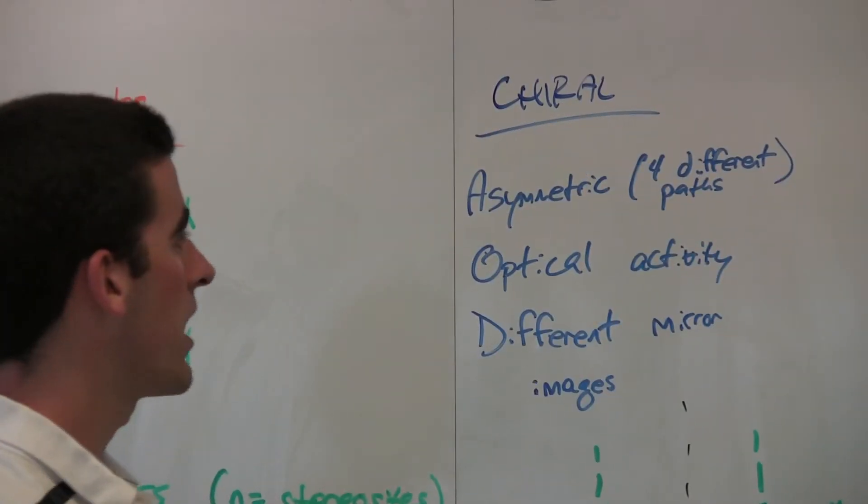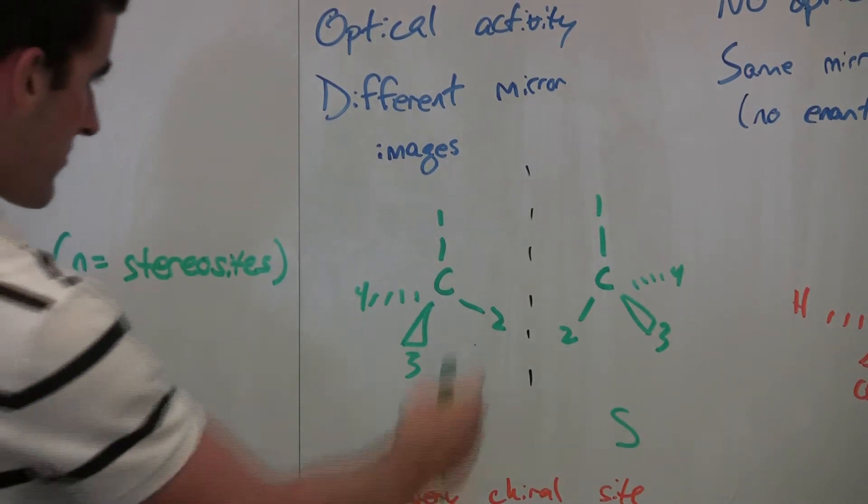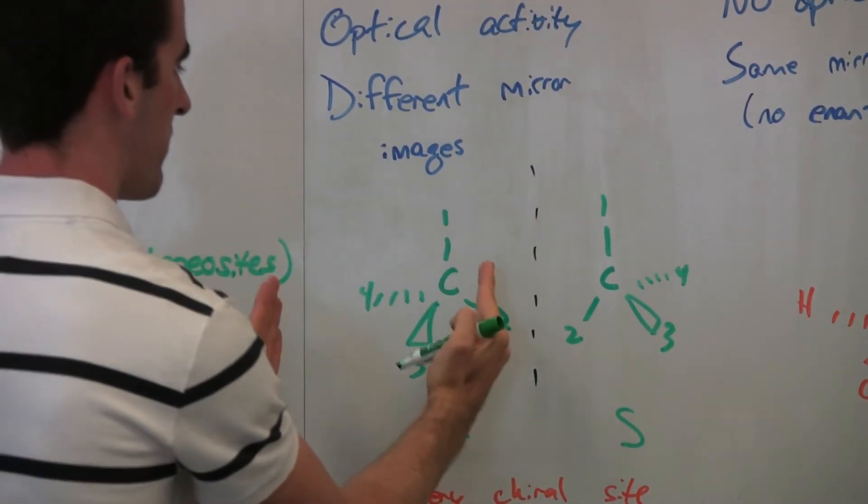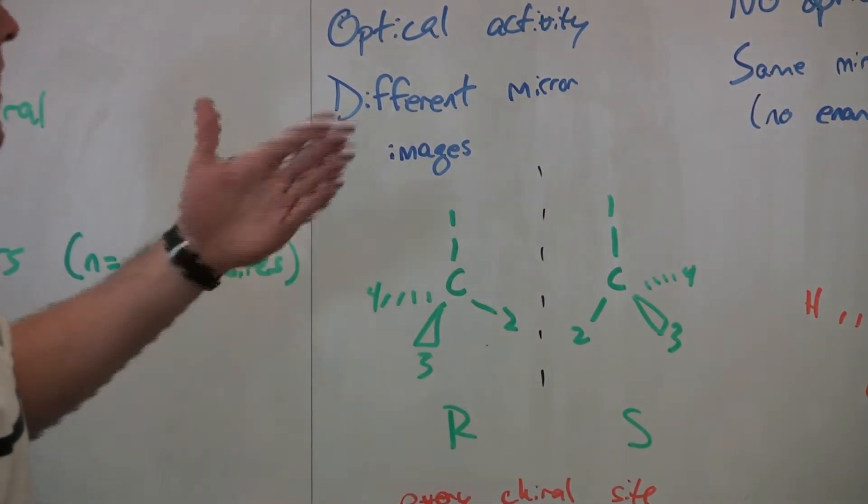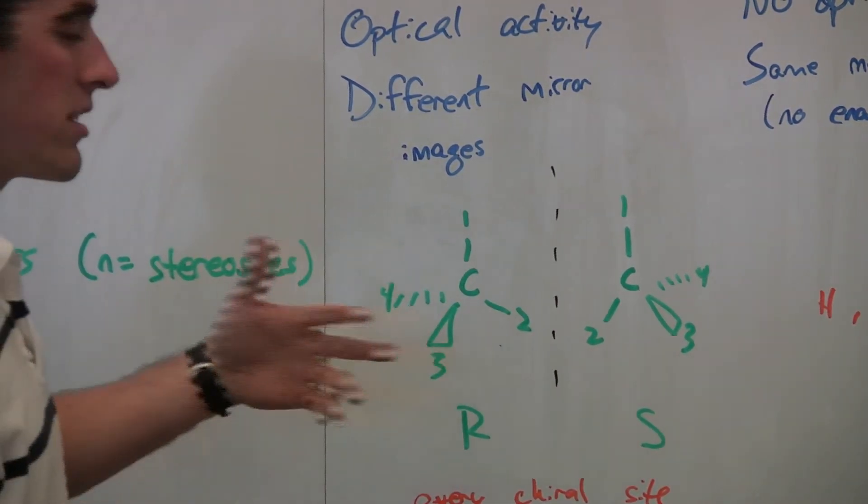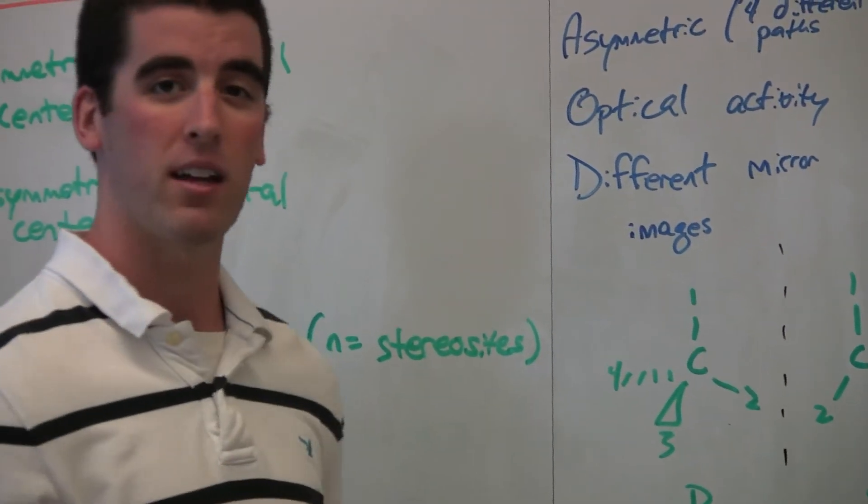Lastly, there are different mirror images with chiral sites like we have here. Now we have another asymmetric tetrahedral carbon. As we have a plane of symmetry here, we can reflect that carbon over to find the mirror image of it. And so we have two actually different configurations, the R and the S.